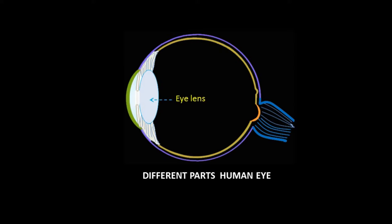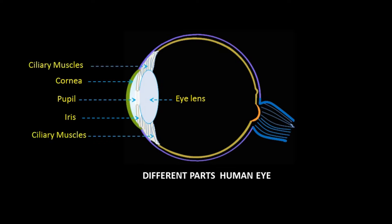Defects of vision and their corrections. Different parts of the human eye: eye lens, cornea, iris, pupil, ciliary muscles, retina, yellow spot, blind spot, and optic nerve.